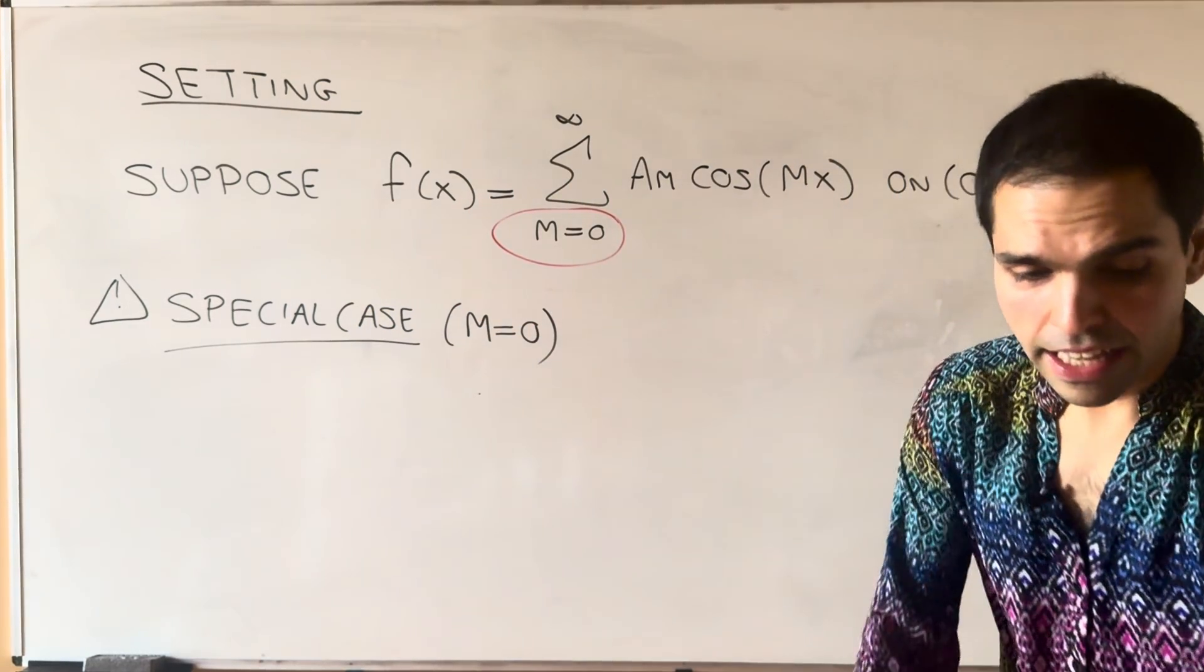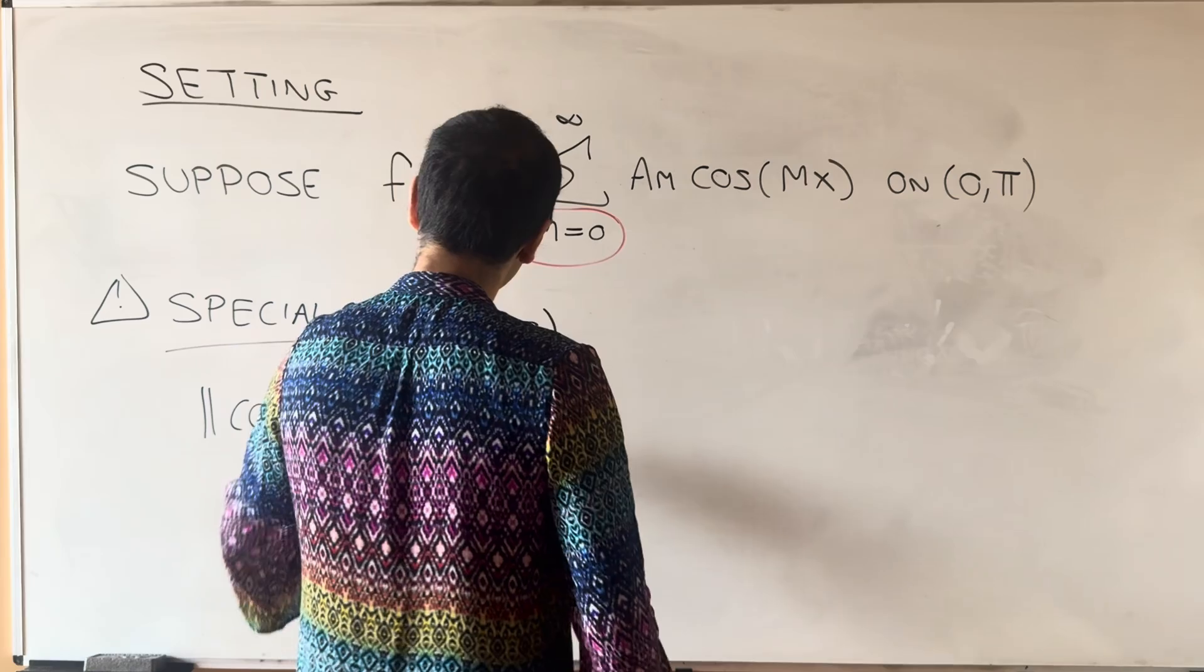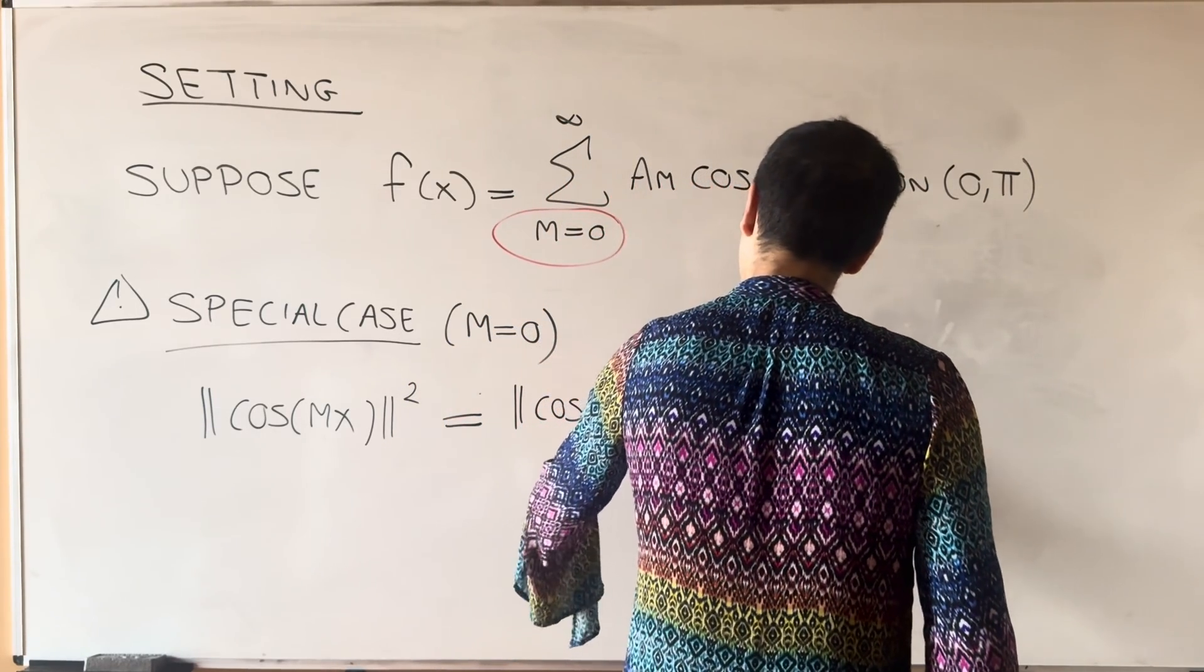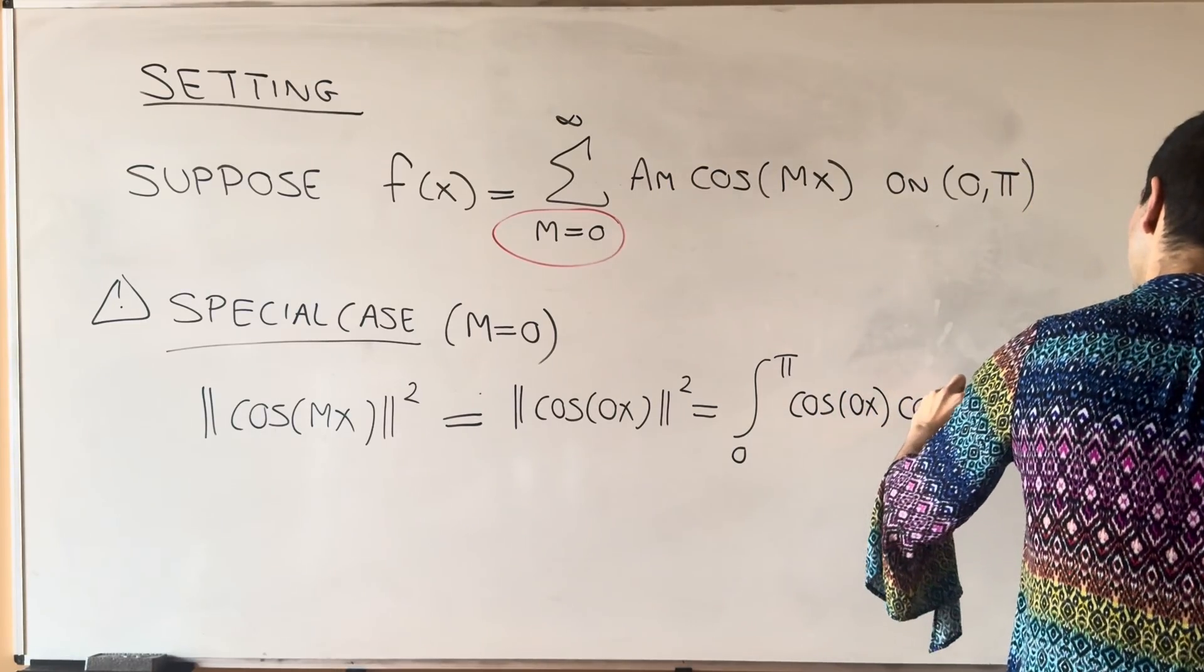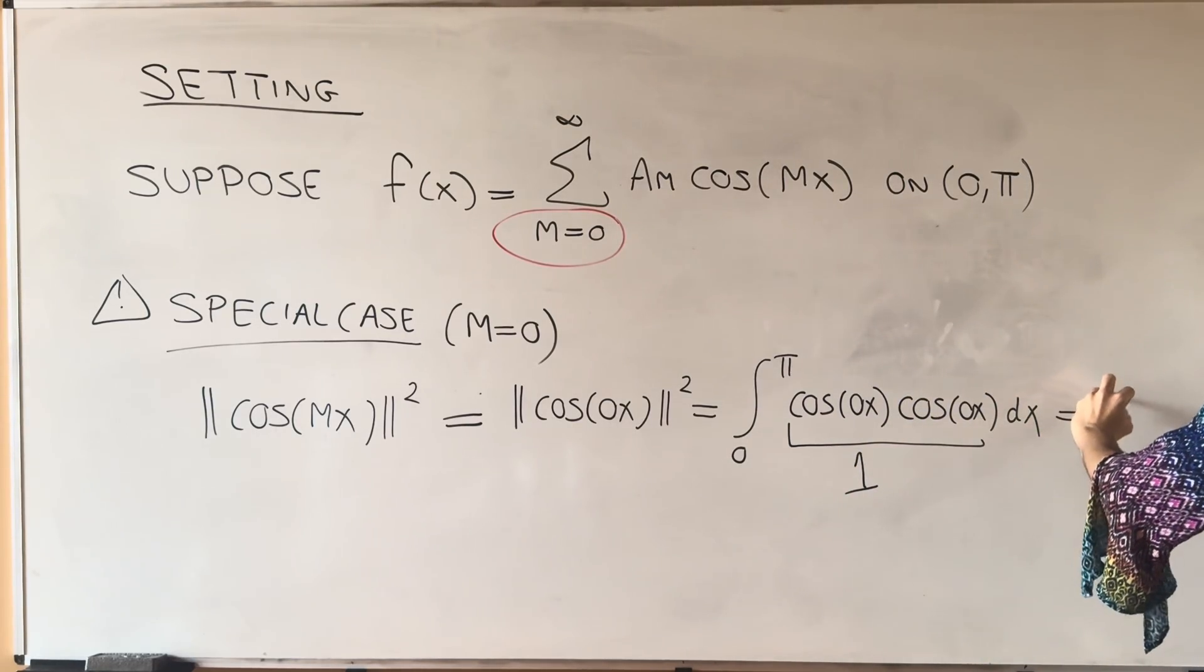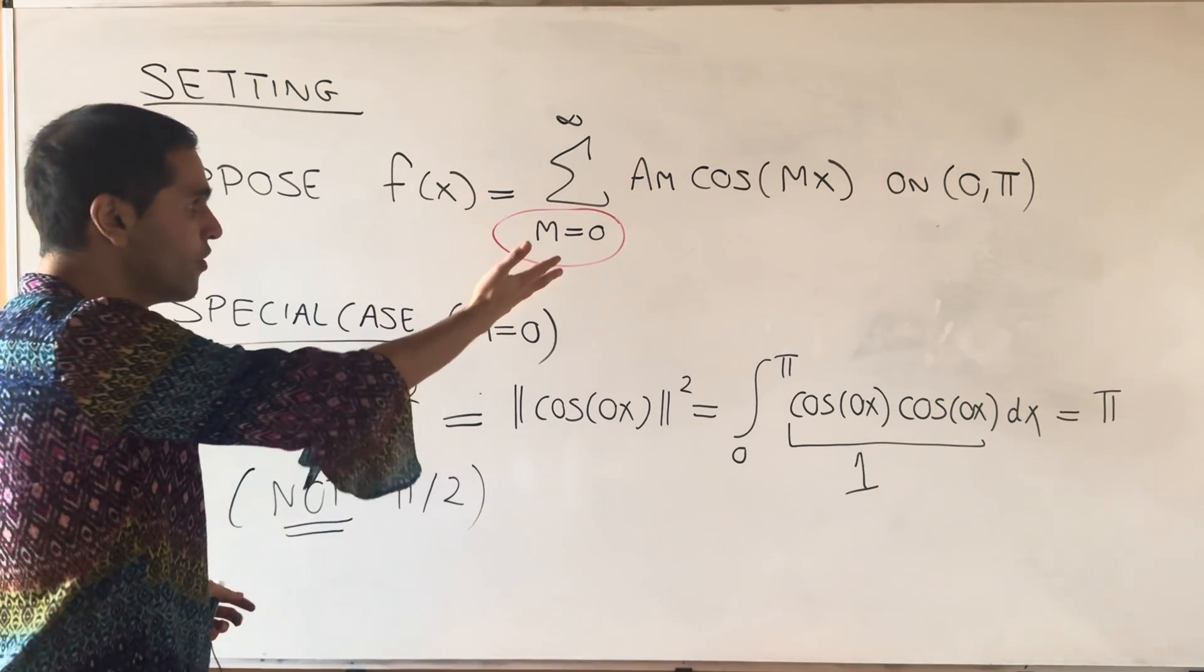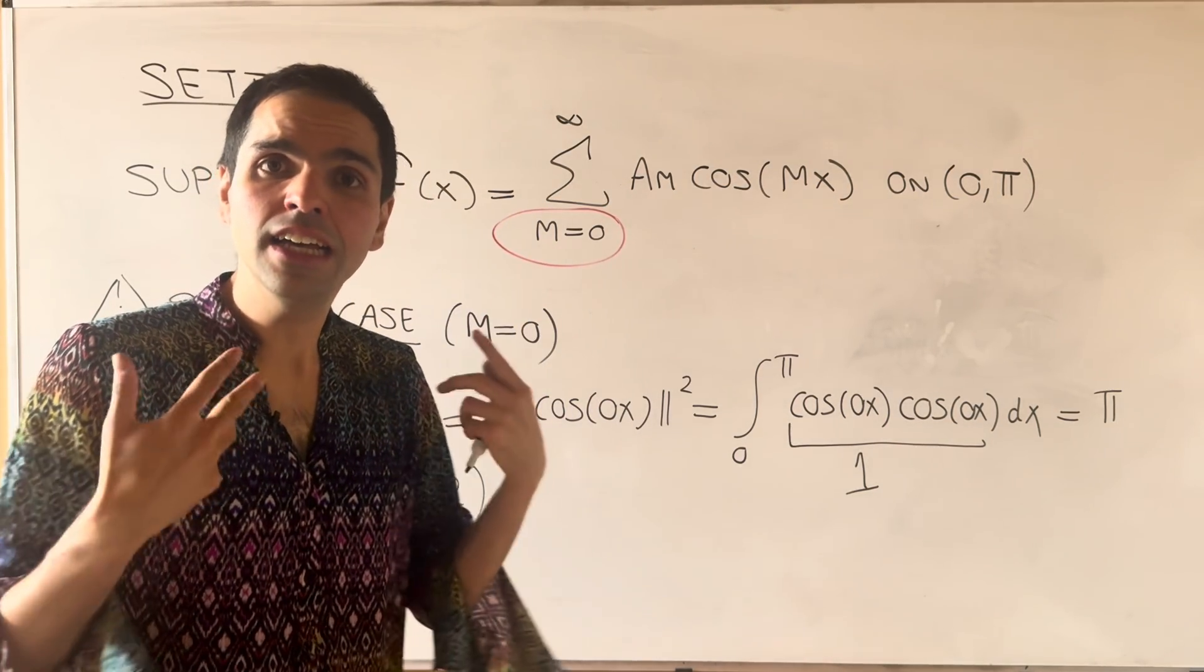Because in that case if you take the length of cosine mx squared, remember before we found pi over 2, but here we have something slightly different, because this is the length of cosine 0x squared, which is really the integral from 0 to pi, cosine 0x times cosine 0x dx. Now the function inside is 1, and so the integral here is pi, and not pi over 2. Whereas for the other cases, the integral was pi over 2. And that's why we just have to slightly modify the a_0 term.